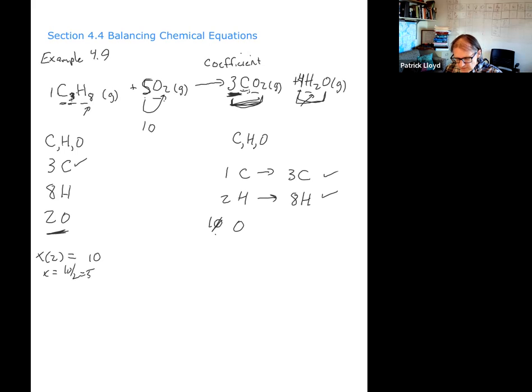If there's nothing written in front of it, it's really a one. If there's just a symbol C, no number next to it, that just means there's one. So let's check our work. One times three, three carbons. Three carbons. Eight hydrogens. Eight hydrogens. Ten oxygens. Six and four, ten oxygens. Looks like it's balanced. You've got ten oxygens on both sides. There you go. There's your balanced equation.